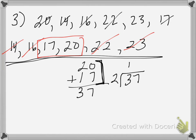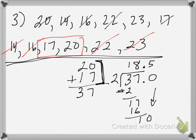2 goes into 3 one time, subtract, leaving 1; bring down the 7 to get 17. 2 goes into 17 eight times, leaving 1. Add a decimal point and a zero; bring the zero down. 2 goes into 10 five times. So the median is 18.5. Again, that number doesn't appear in the data set, but that's expected.